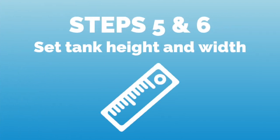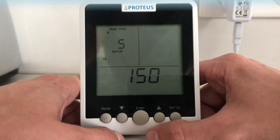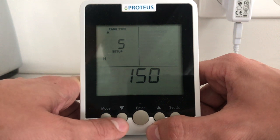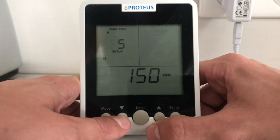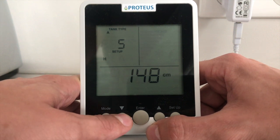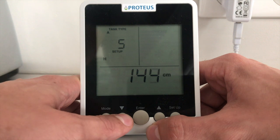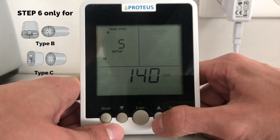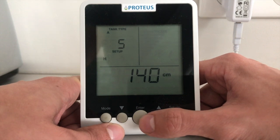In steps 5 and 6, we set the tank height and width in centimeters depending on our type of tank. Adjust by using the up and down arrows and press enter to confirm. Setting the width in step 6 is specific to tank types B and C only.